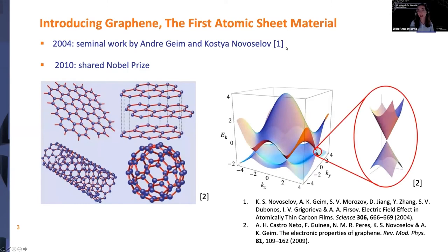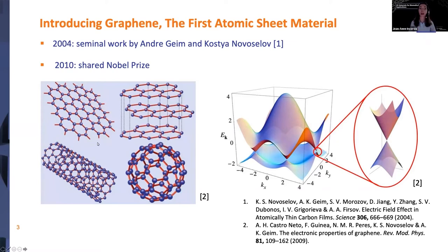Graphene is considered the first atomic sheet material. Probably many of you are familiar with graphene. In 2004 there was a seminal work by Andrei Geim and Kostya Novoselov, and that led to the 2010 shared Nobel Prize. Graphene is this atomically thin structure of carbon atoms. It can be layered into sheets, rolled up to form carbon nanotubes, or carbon atoms can form a buckyball shape, more like a quantum dot.